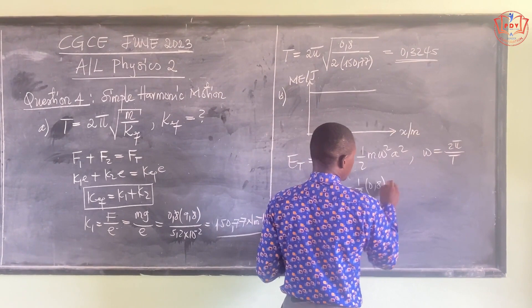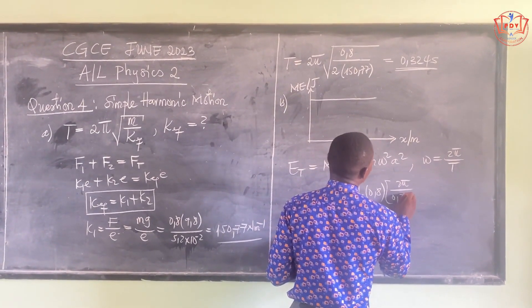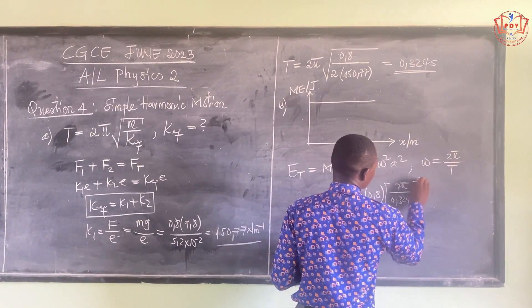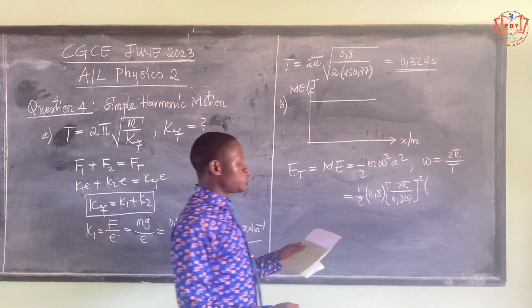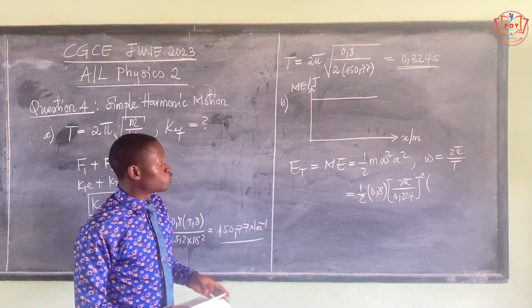Times the amplitude. The amplitude normally is the further distance by which the mass was pulled. Because when the mass is suspended, it is at equilibrium.